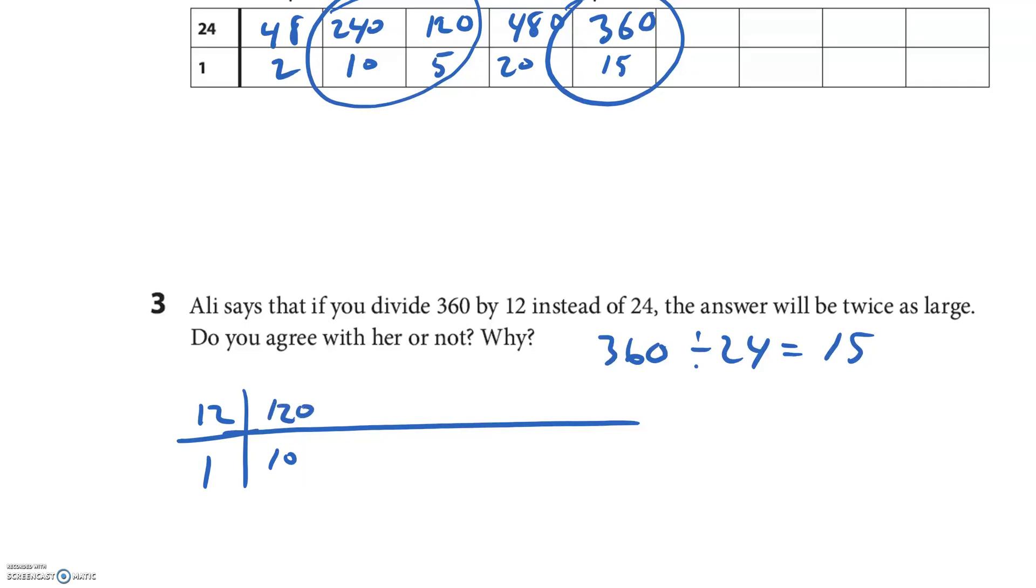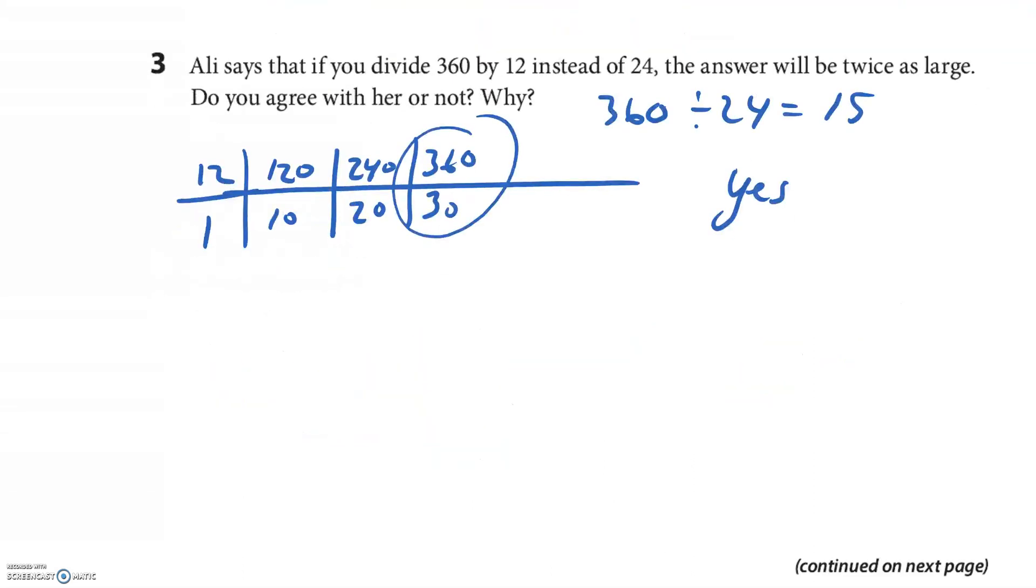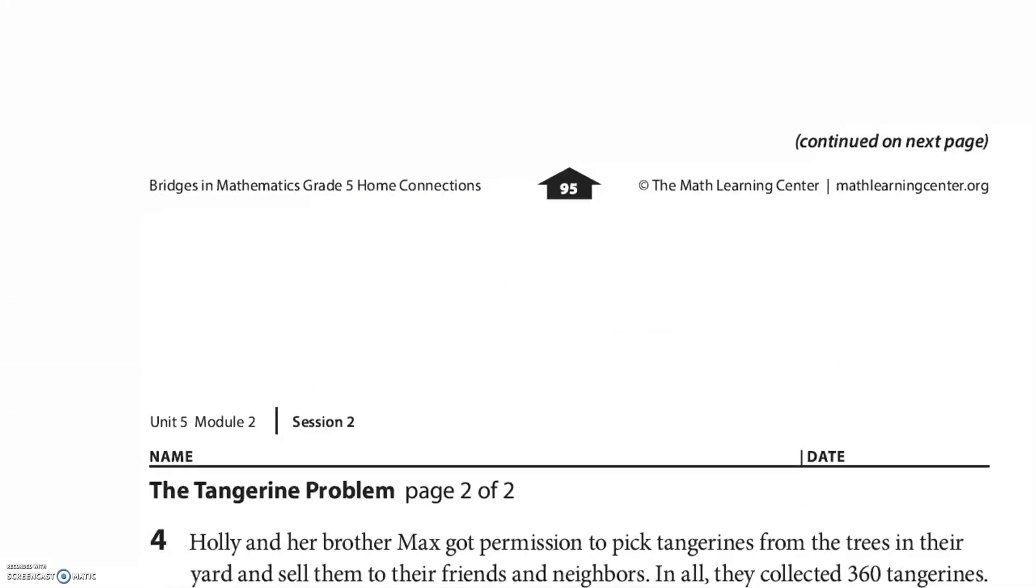We'll go 12 and 1, and then we want to get to 360. 10 would be 120, 20 would be 240, 30 would be 360 because I'm going up by 120s. And there's my answer. Yeah for sure, 30 is double of 15, so yes I agree with her. And there's my work right.